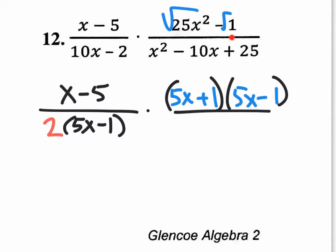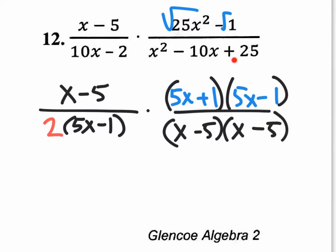Now for the bottom quadratic trinomial, we could factor that. We're going to put the x and the x, and you simply think what times what is the last number that if I combine together is the middle value. That's going to be a negative 5 and a negative 5 — minus 5, minus 5. Negative 5 times negative 5 is positive 25. If I combine them together, it does give me the negative 10 in the middle. So step 1 is to completely factor everything possible, and we did. Now let's cancel things out because we have multiplication. This 5x minus 1 on the bottom will cancel out with the 5x minus 1 up there.